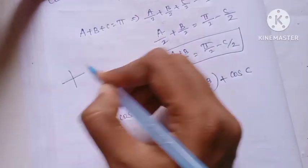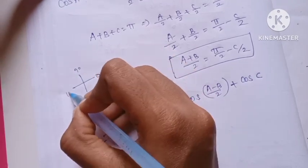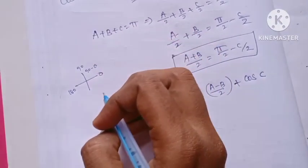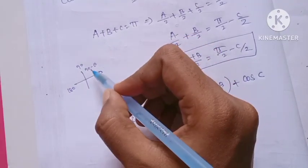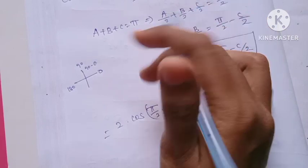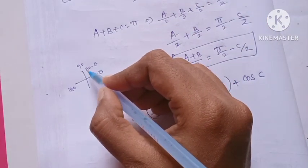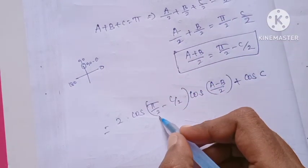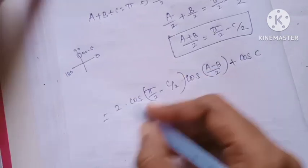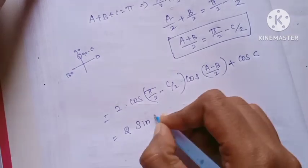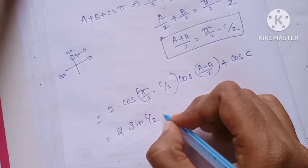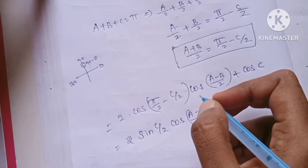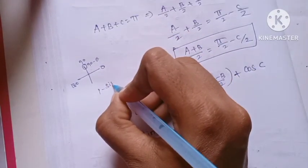We consider angles only from 0 to 90 degrees, first quadrant, where all values are positive. Since sin and cos interchange at 90 degrees: cos(90 minus theta) equals sin theta. Therefore, cos(pi/2 minus C/2) becomes sin(C/2). So we get 2 sin(C/2) cos(A minus B)/2 plus cos C.